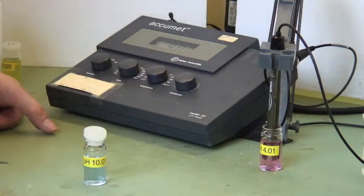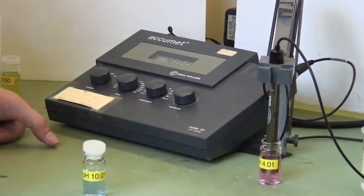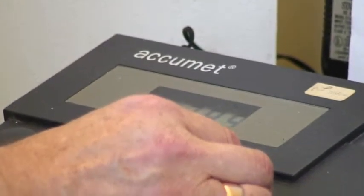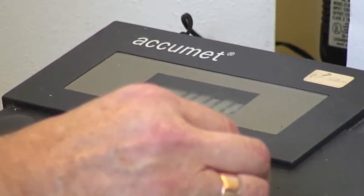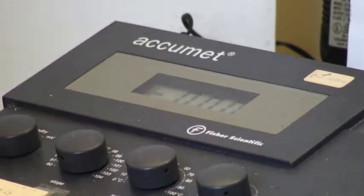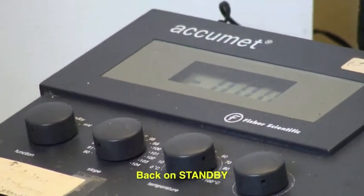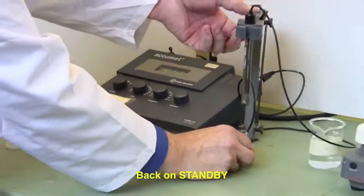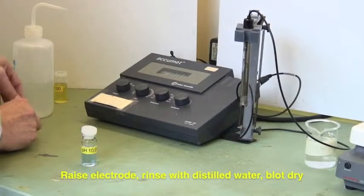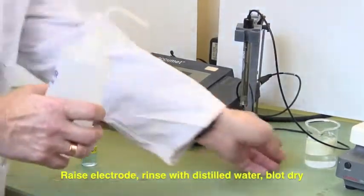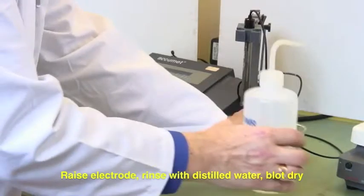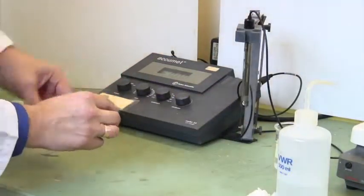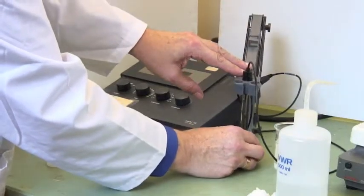That's set at 4.01. Put it on standby for the second calibration. Lift it from the buffer solution, replace the cap, rinse the electrode, and blot it again. Now place it into the pH 10 buffer.